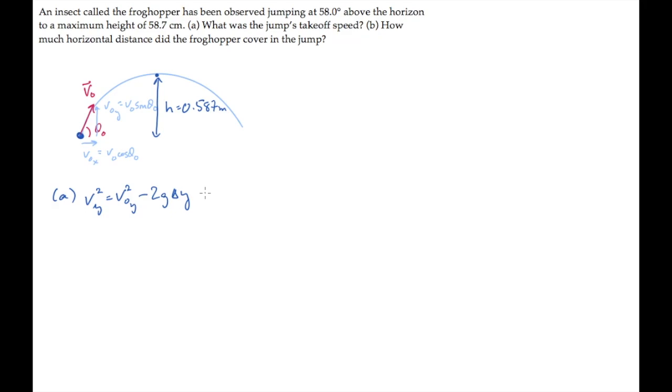Choose as the final location the point where the insect's at its maximum height, that's here, where the y component of velocity equals 0. Substitute those values to find that v0y equals square root of 2gh.